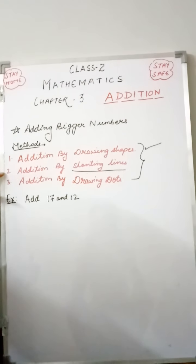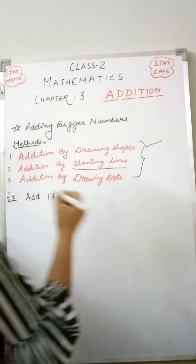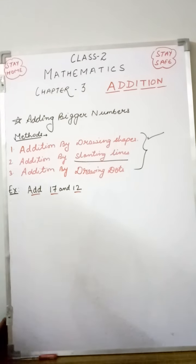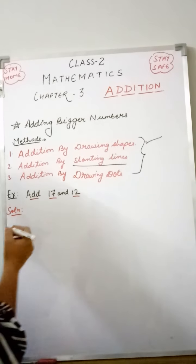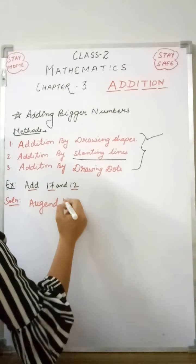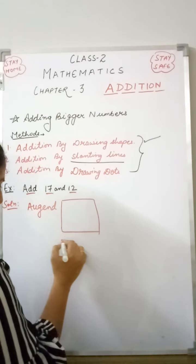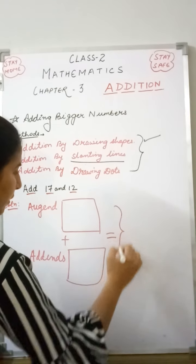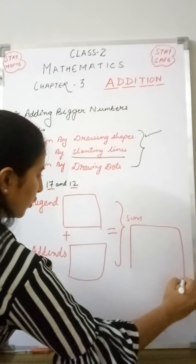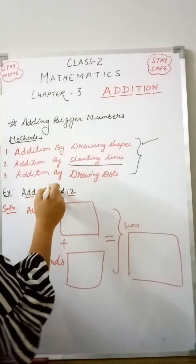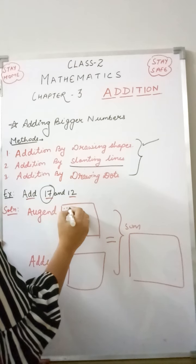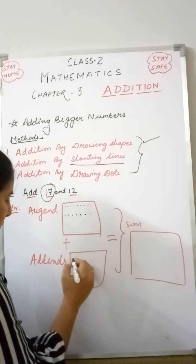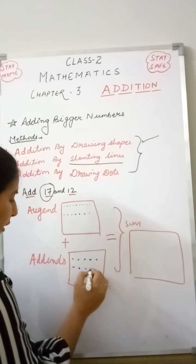Now the third one is drawing dots. In this method, we do addition using dots. The question is 17 plus 12. For the solution, we draw the Augend, Addend, and Sum boxes. The Augend is 17, so let's make 17 dots — counting 1 through 17. Now for the Addend, which is 12, we draw 12 more dots — counting 1 through 12.